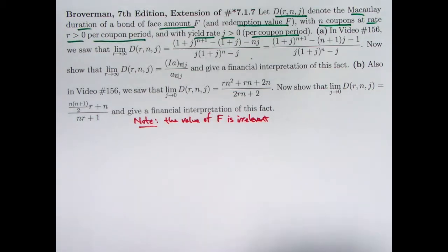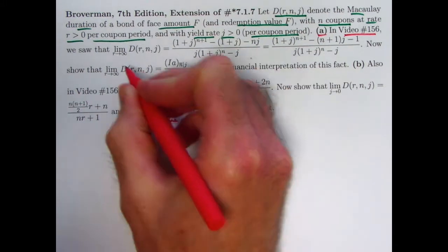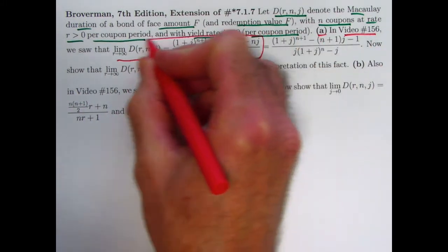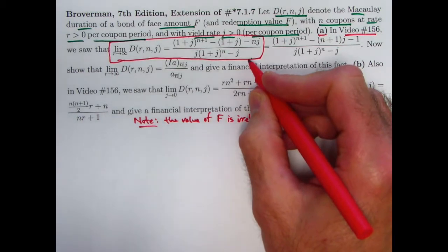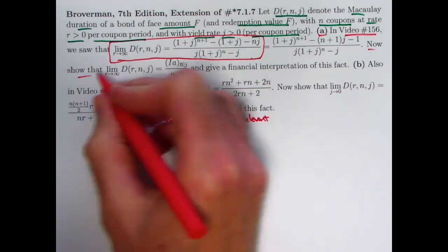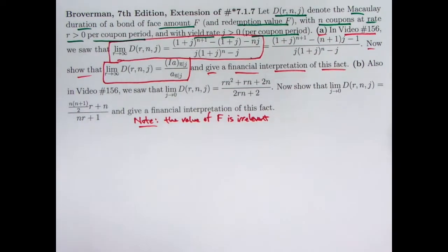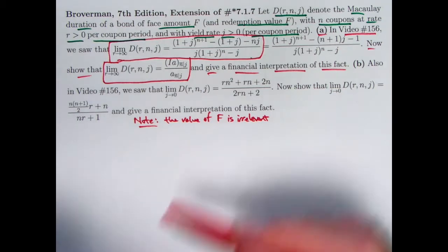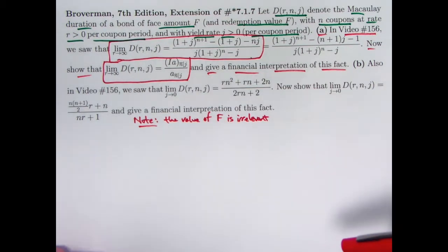So from this point on I'll take the value of F to equal one in thinking about the rest of the things in this video. Part A. In that last video, video 156, we saw this fact right here that the limiting value of the duration as the coupon rate goes to infinity equals this. And I said that's kind of a complicated formula, hard to give a financial interpretation to that. It also does happen to equal this, that's not a big deal, it's just something I added on here.